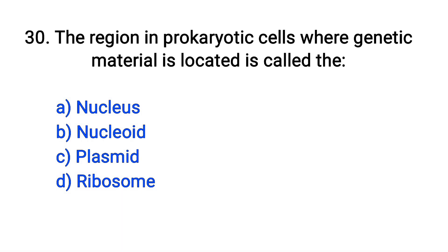Question number 30. The region in a prokaryotic cell where genetic material is located is called: nucleus, nucleoid, plasmid, ribosome. The right answer is option B: Nucleoid.